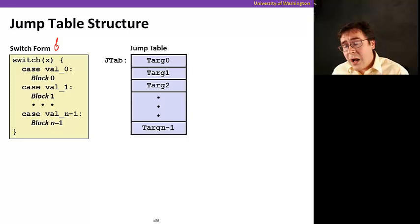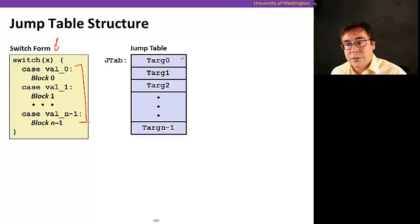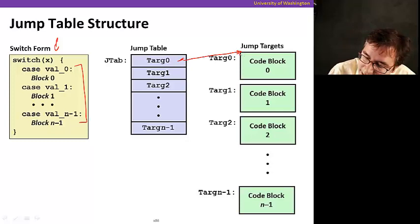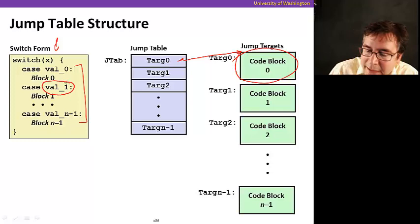Say here we have our example, we have an example of a switch statement. Now we're going to have a table that has roughly as many entries as the number of cases in our switch statement. And now in each one of these entries in the table points to the address of a code block which corresponds to the code block that has to be executed based on the case value.